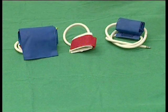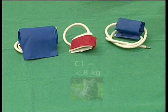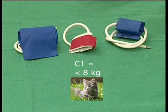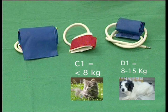Before measuring an animal, select the right cuff. HDO comes with three cuffs for small animal measurements. This is the cat cuff, which can be used for toy breed dogs, rabbits, ferrets, and other small mammals. This is the small dog cuff. This is the large dog cuff.